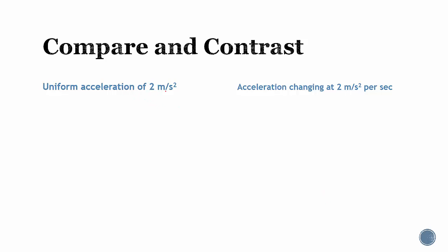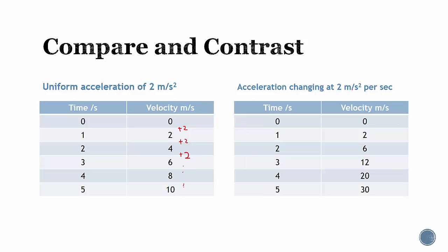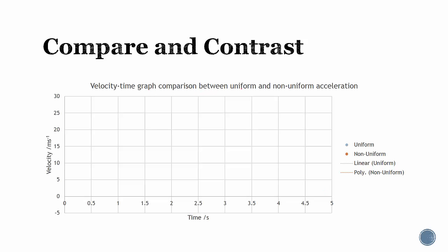To understand the difference, compare uniform and non-uniform acceleration. With uniform acceleration of 2 meters per second squared, the velocity changes by a constant +2 every second. But if the acceleration itself is changing at 2 meters per second squared per second, then the acceleration grows: at successive seconds it is +2, +4, +6, +8, +10, and so on. So instead of a constant change in velocity, the change in velocity is also increasing — this is what non-uniform acceleration means.